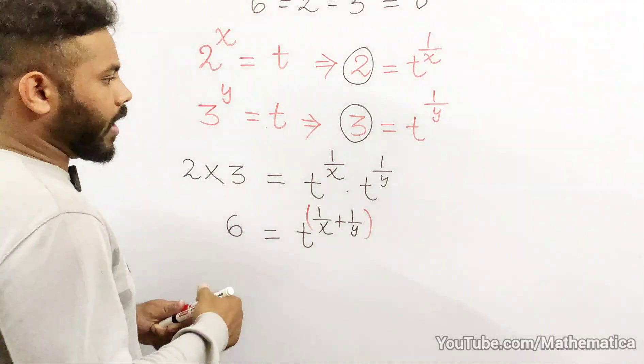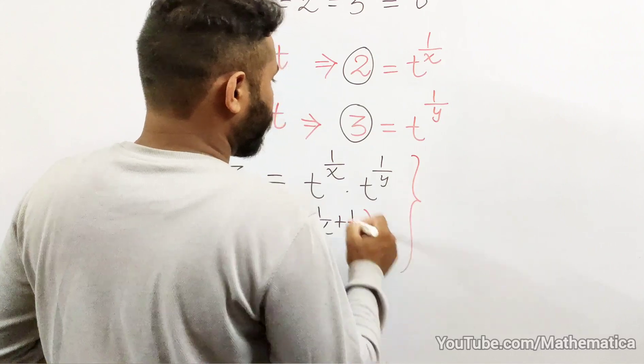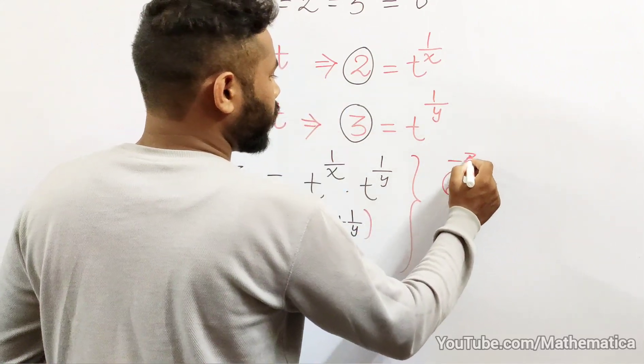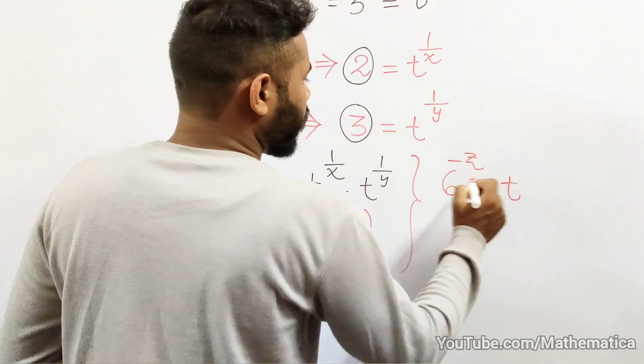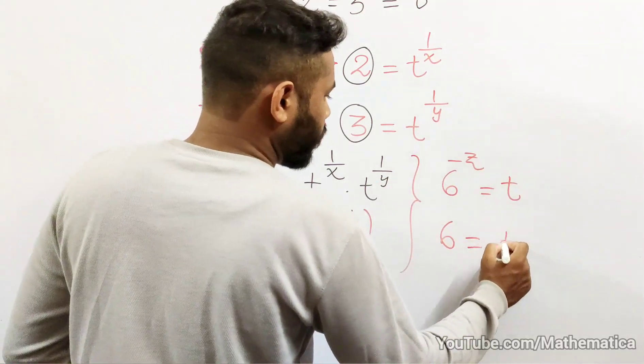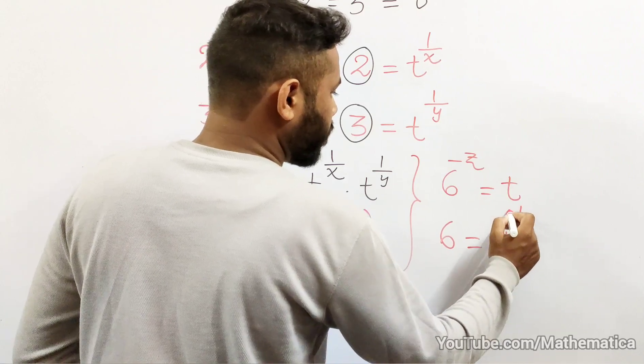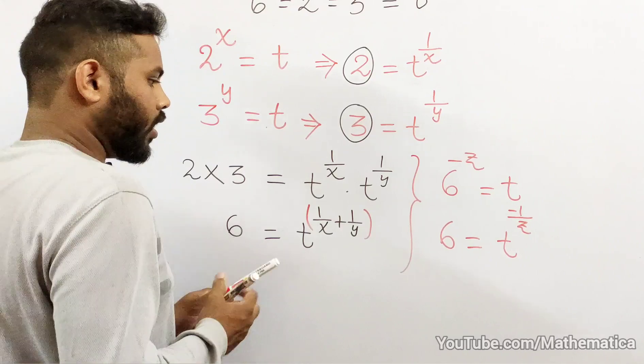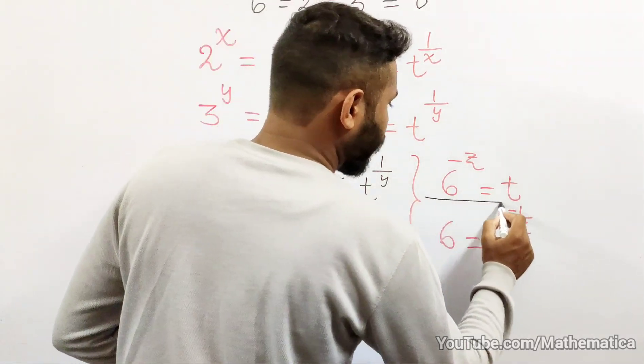Another thing that we left: likewise we can do 6 to the power minus z is also equals to t. Therefore, 6 is equals to t to the power minus 1/z, and I can literally use this expression here.